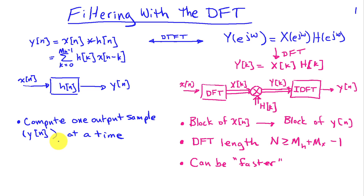On the left we have the conventional convolution sum which computes one output sample y[n] at a time by adding up the product of h and x. On the right with the DFT approach, in order to take a DFT we need to have a block of data x[n]. So we have to collect our data and we get a whole block of y[n] at once. This is a block approach, and our DFT length must be N ≥ length of h plus length of x minus 1 to ensure that we don't have problems with the difference between linear convolution and circular convolution.